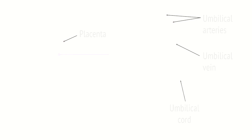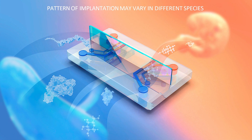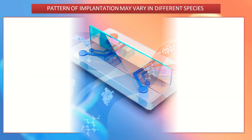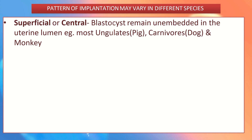The pattern of implantation may vary in different species. First, it can be superficial or central, in which the blastocysts remain unembedded in the uterine lumen. For example, most ungulates like pigs, carnivores like dogs, and monkeys.